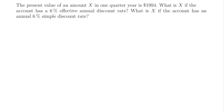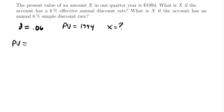So D is equal to 0.06 — that is the effective annual discount rate of 6%. In this particular problem, we are told that the present value of an amount deposited is $1,994, so our present value is equal to $1,994. We are looking for the amount deposited, X. We can set up an equation using our present value formula. The present value is equal to some amount we start with — that's going to be X — and then we multiply by our present value factor. In this case, we're working with an annual discount rate, so we need to use the discount rate present value factor rather than a normal interest rate present value factor.